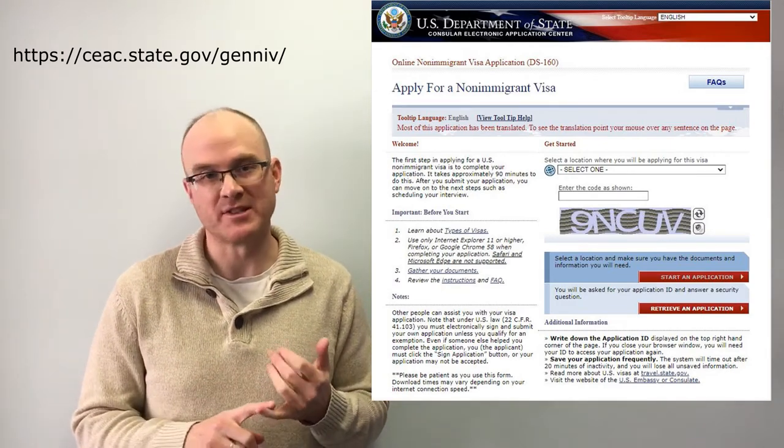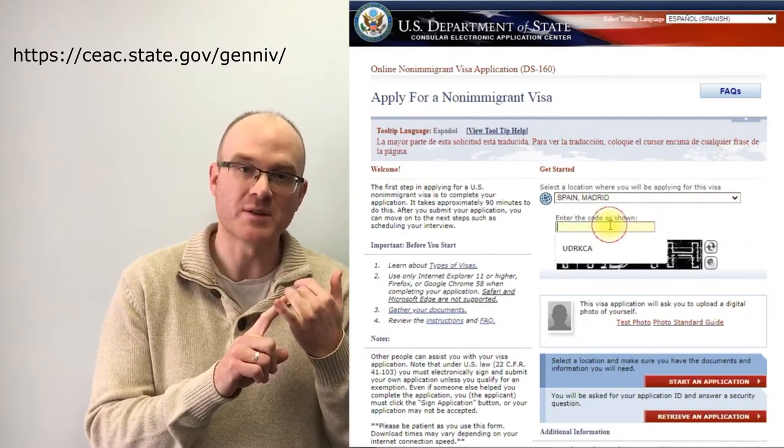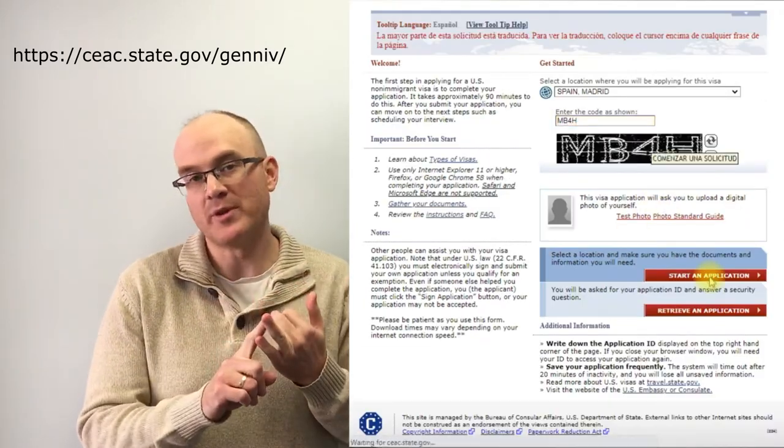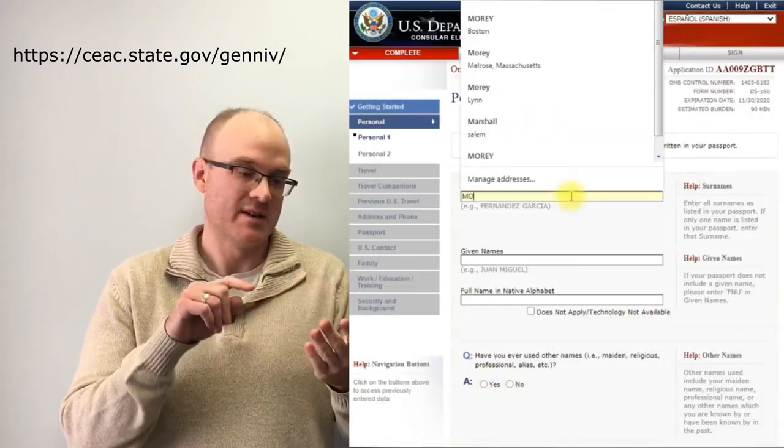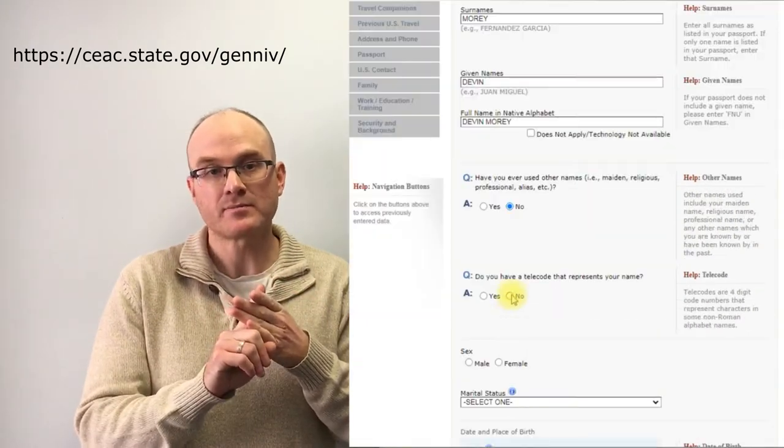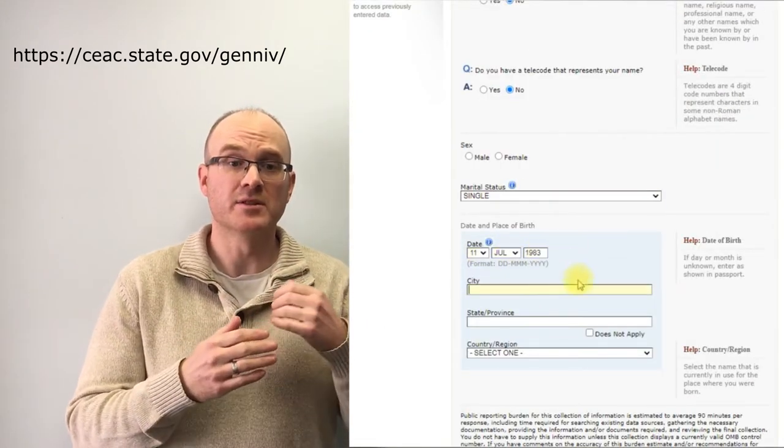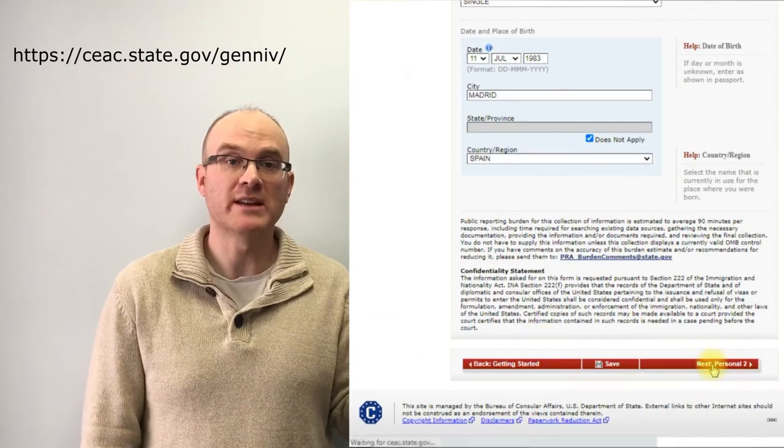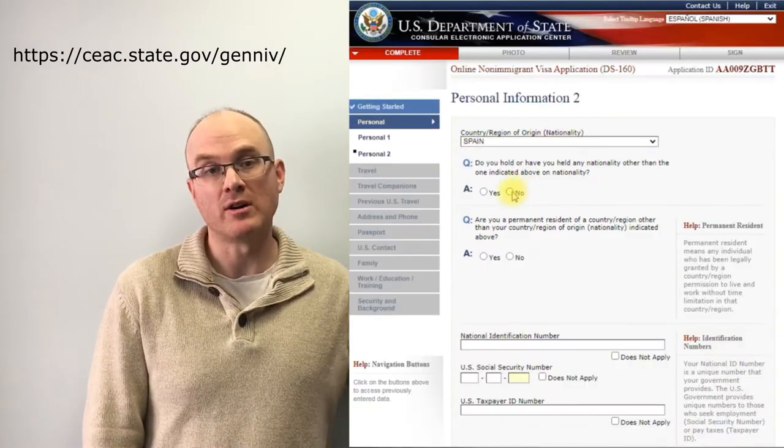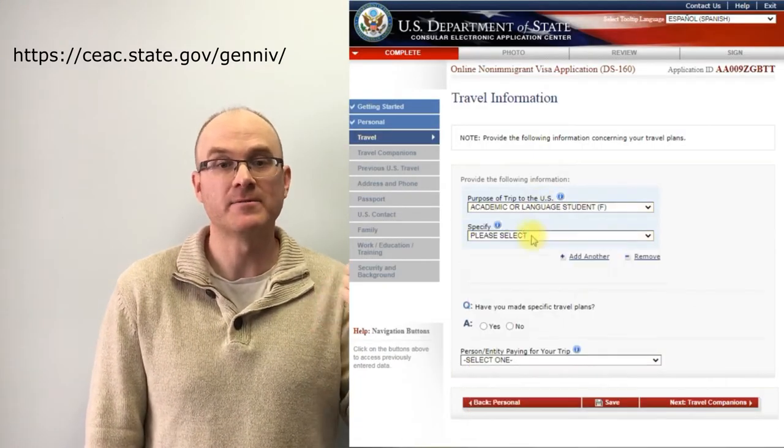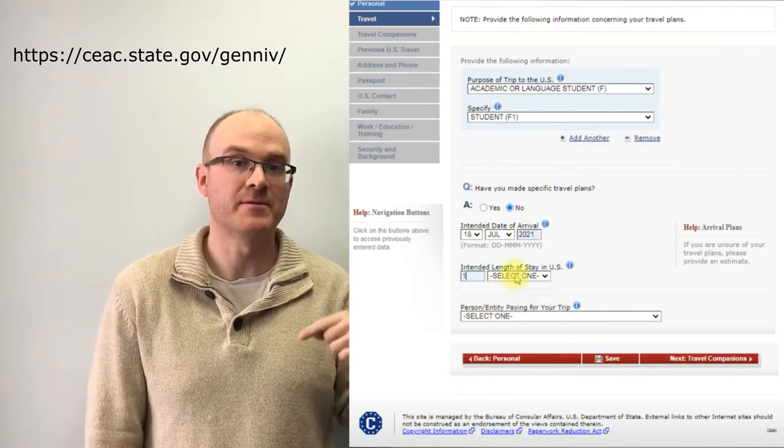The DS-160 is a fancy name for how to get the visa interview. They ask basic information like, have you applied for a visa before? What's your full name? Are you married? What's your address? And you'll have to upload probably a two by two photo onto this website as well. So have a photo, a digital copy of a photo already.